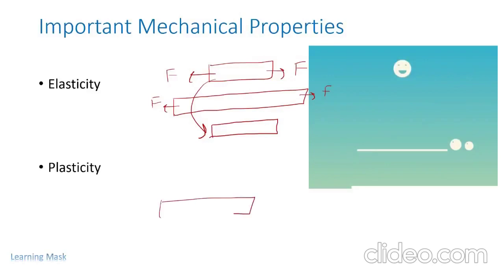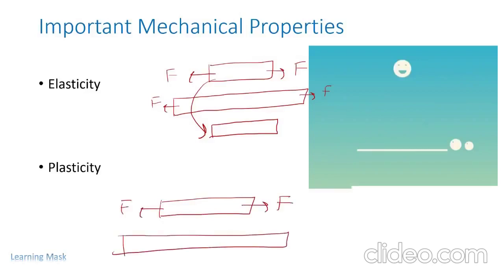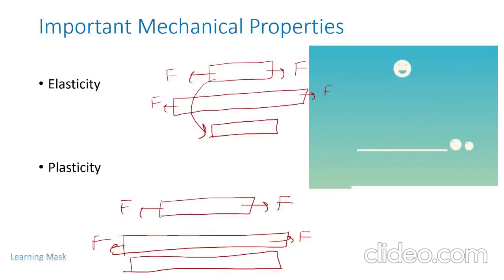Suppose we have an object and we apply a force to it — it gets deformed. After application of force, when we remove the force from this material, the material does not come back to its original position. That is, the initial and final positions are not the same — it remains deformed. This type of material is called plastic, and the property by which it gets deformed and does not return to its original position is known as plasticity.